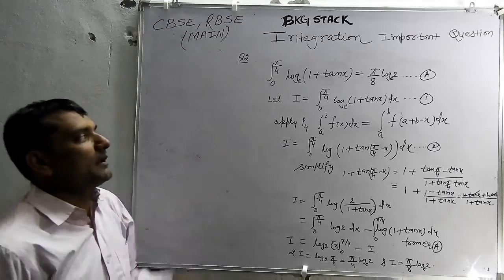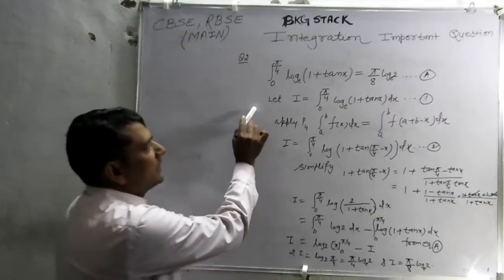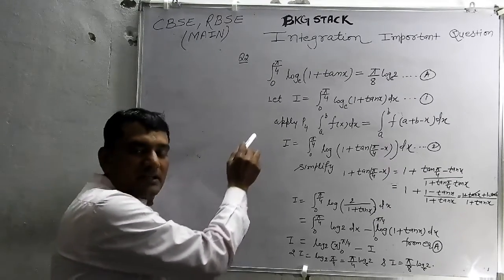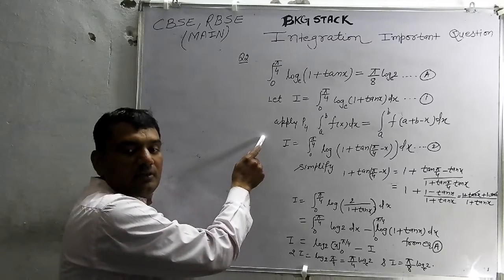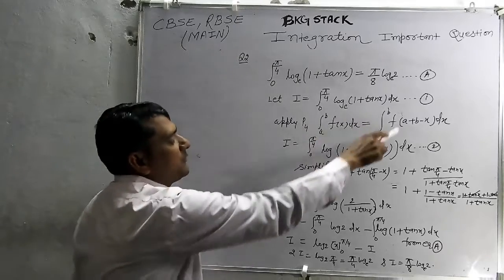Let I equal 0 to pi by 4 log 1 plus 10x. Let equation 1. We can write by the property P4.